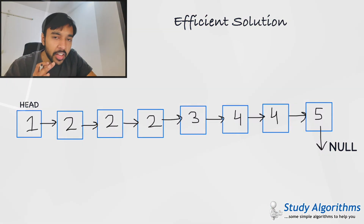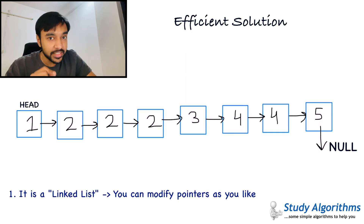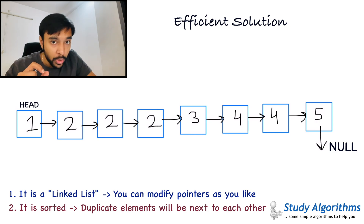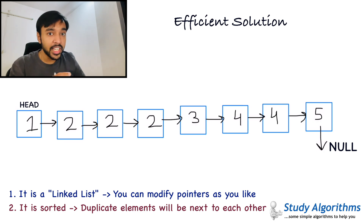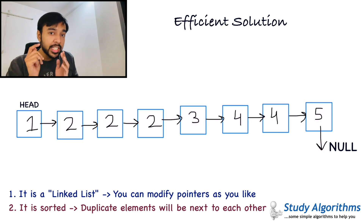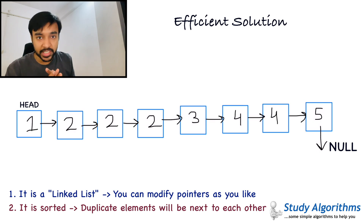To find an efficient solution, let us try to take advantage of this fact. To come up with an efficient solution to this problem, you need to take advantage of two facts. Number one, that this is a linked list, and in a linked list you can modify the pointers as per your wish. Number two, you need to take advantage of the fact that this list is already sorted — that means any duplicates that exist in the list would always be adjacent to each other. Keeping these two facts in mind, we can come up with an efficient solution that can save us space and time as well.